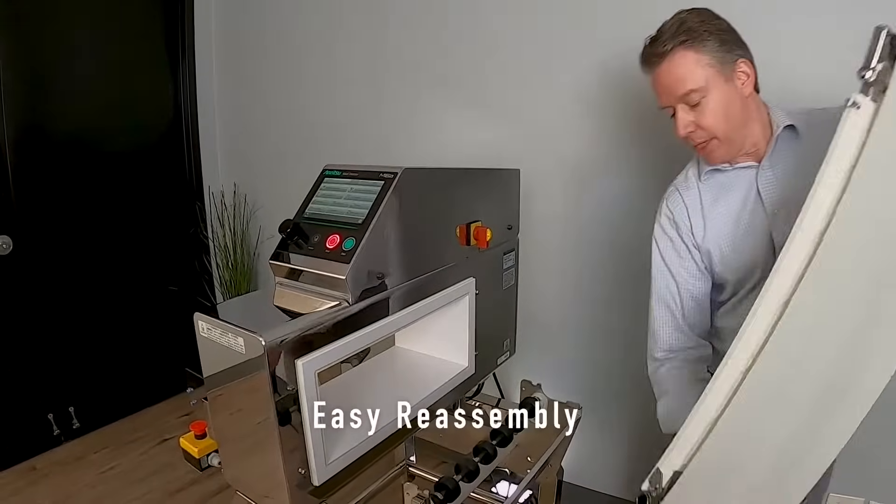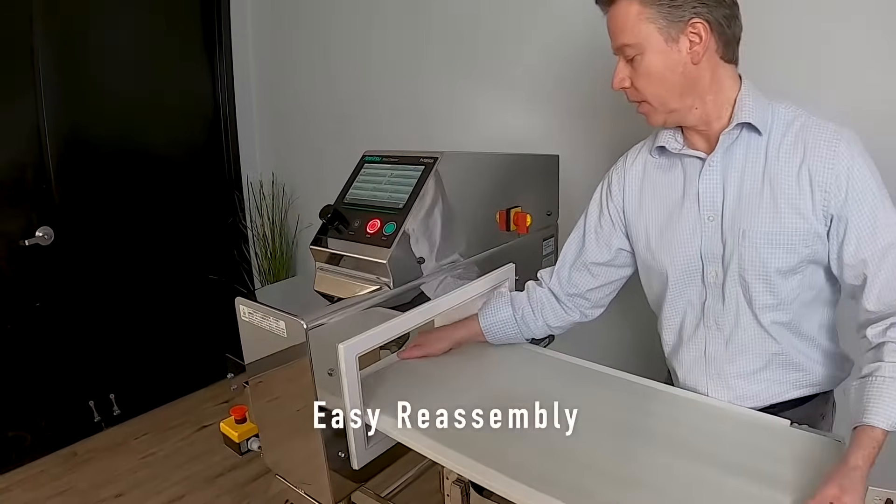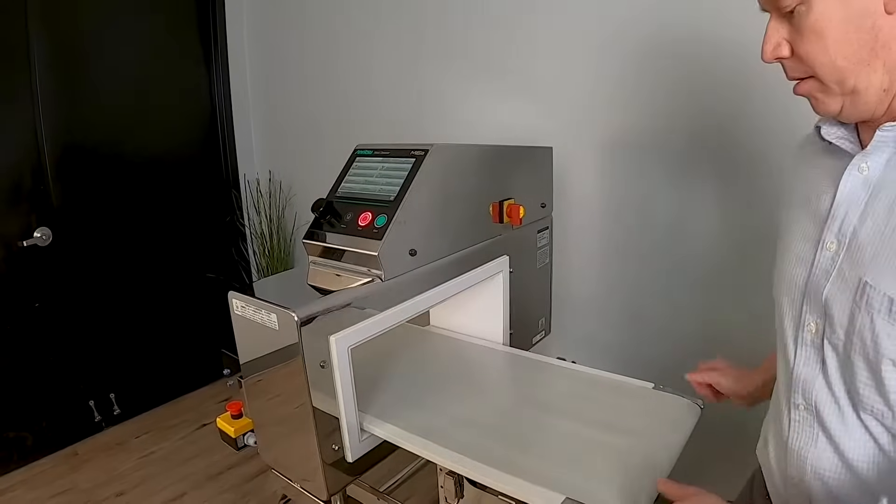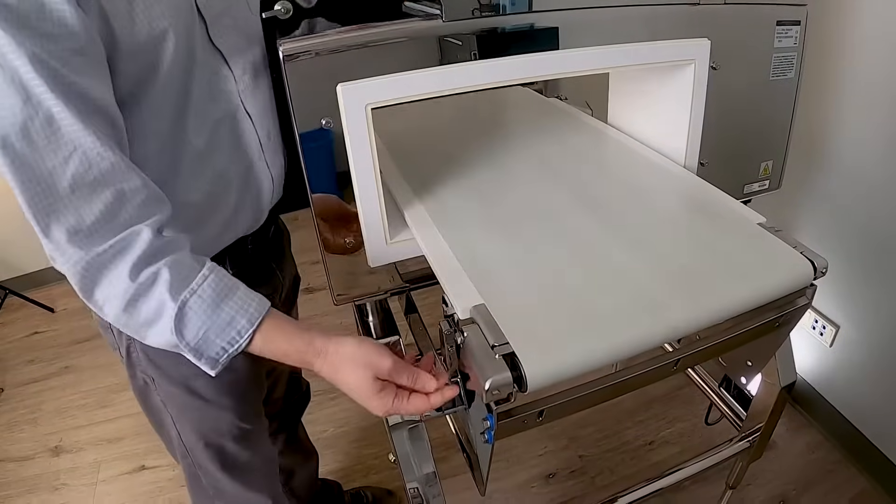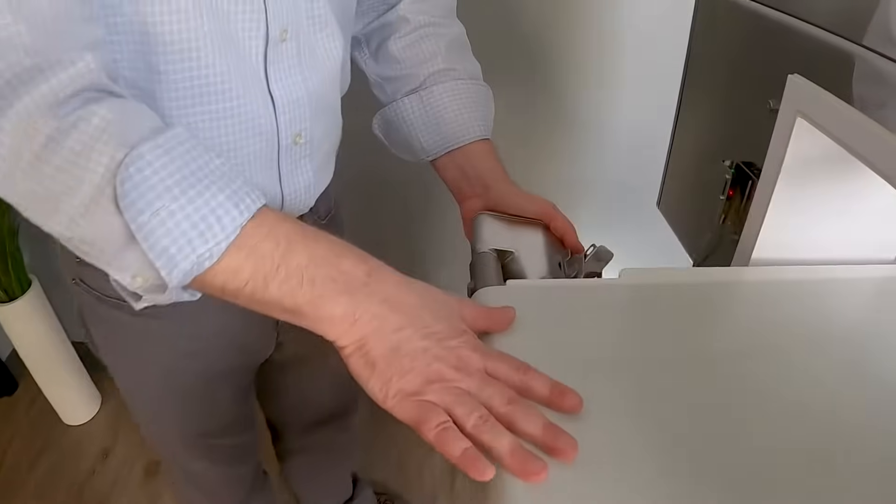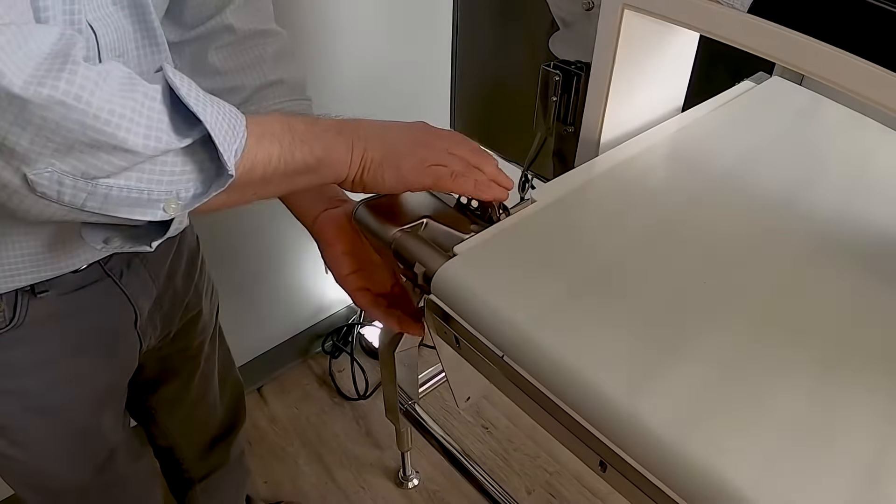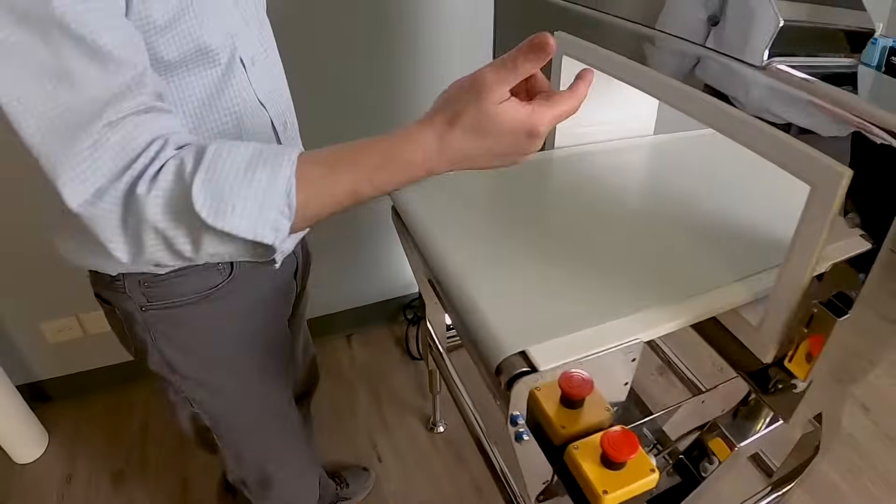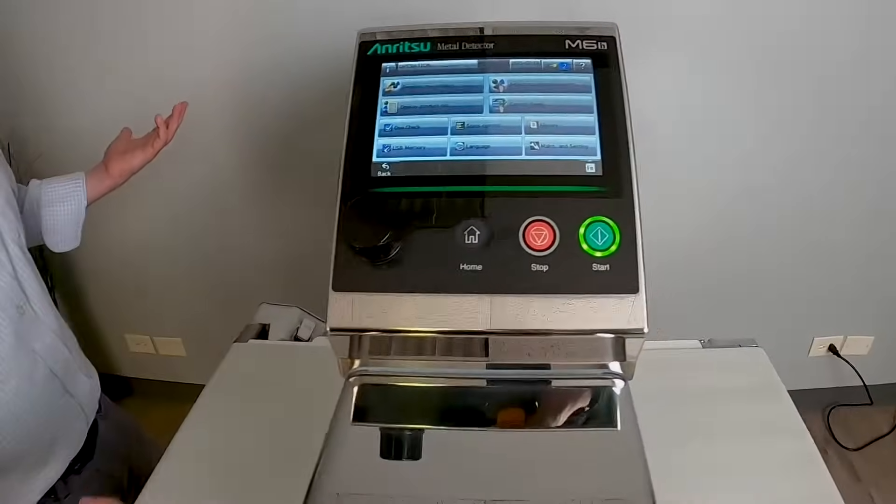Putting it back in is the same exact way, just in reverse. Put the two clips on. And then you just give it a little push on the belt in here to get the coupler aligned. Back in. We're ready to go.